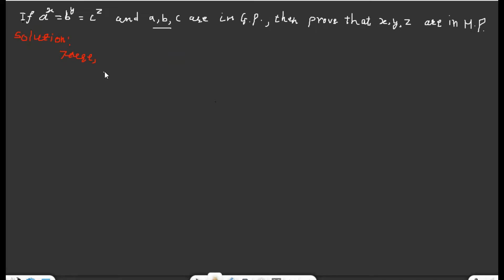So I'm going to start. First of all, here is the given relation: a to the power x equals b to the power y equals c to the power z. This is the given statement — our given relation.